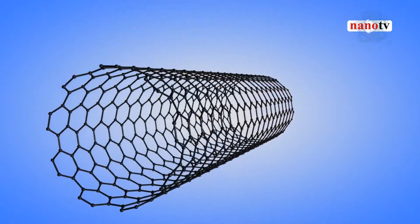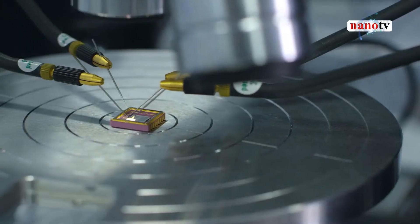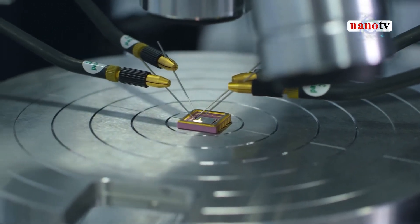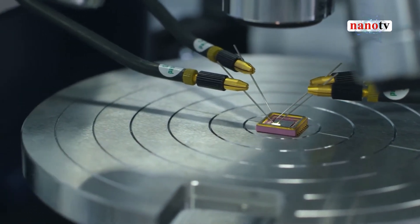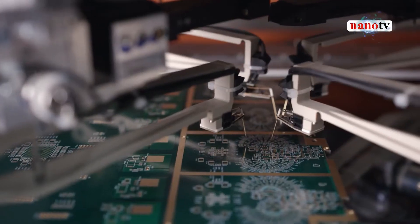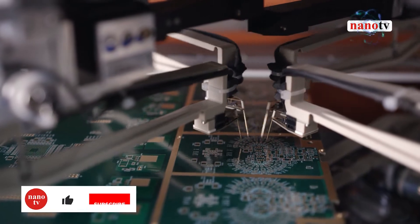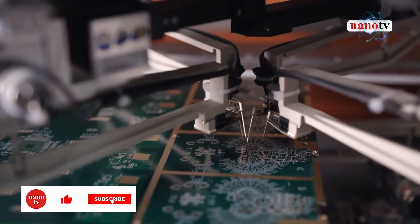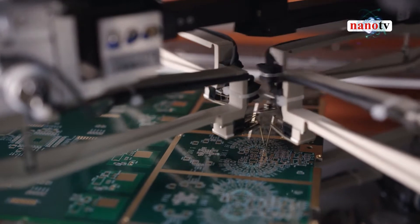Graphene possesses a number of unique properties that cannot be found in other non-metallic materials. Since graphene has many unique properties, it is ideal for use in electronic applications when compared to other traditional materials.